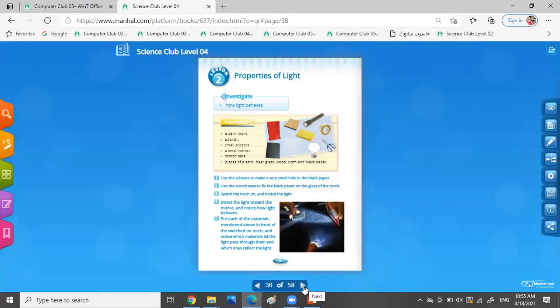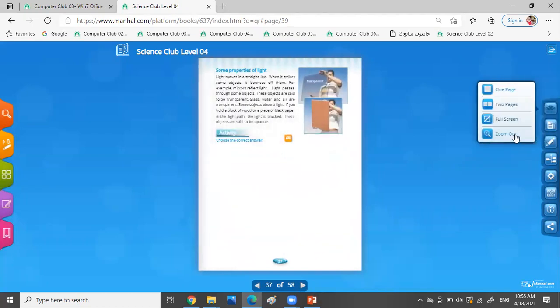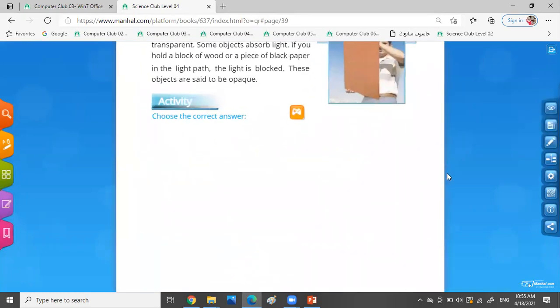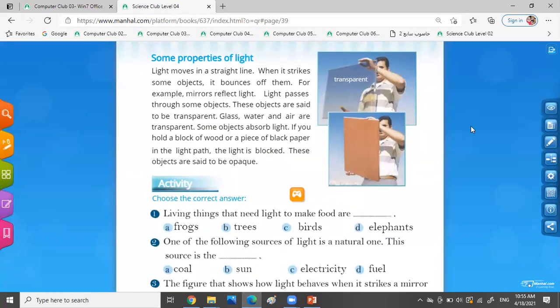Okay, let's talk about the properties of light. Some properties of light. Number one: light moves in a straight line when it strikes some objects. When it strikes some objects, it moves in a straight line.